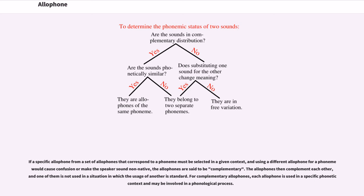The allophones then complement each other, and one of them is not used in a situation in which the usage of another is standard. For complementary allophones, each allophone is used in a specific phonetic context and may be involved in a phonological process.